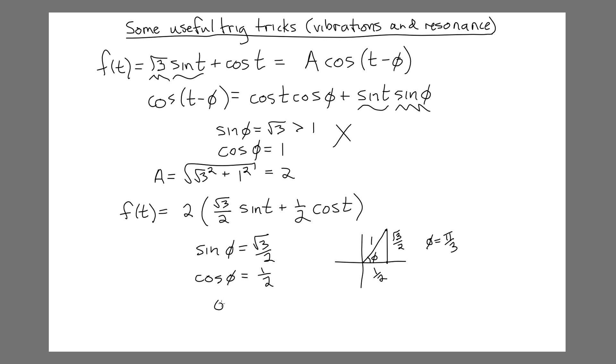So now we get that phi is equal to pi over 3, and we can now rewrite f of t as equal to 2 times the cosine of t minus pi over 3.